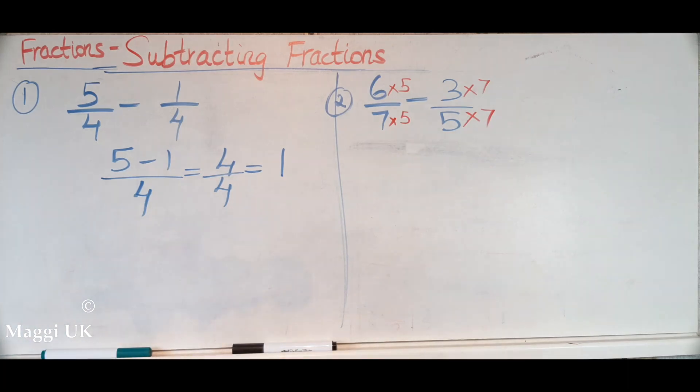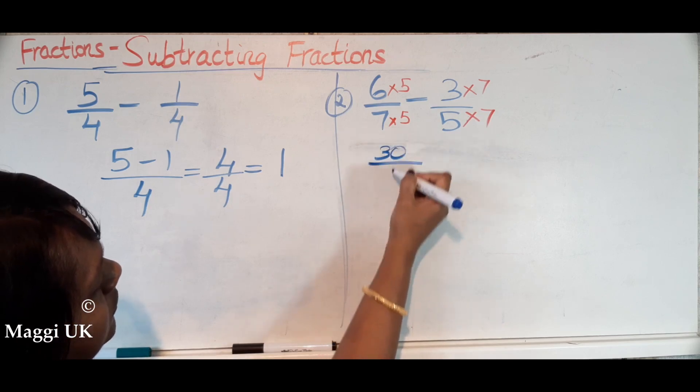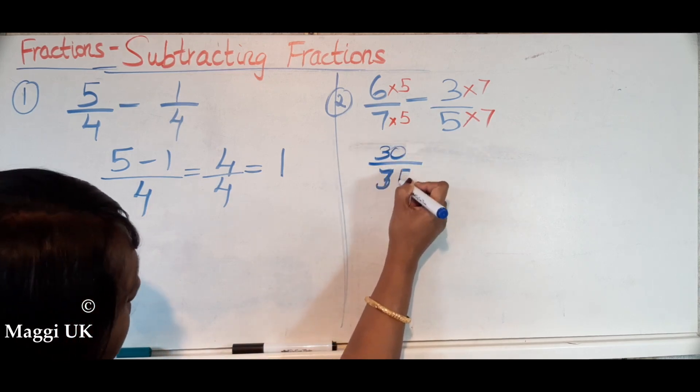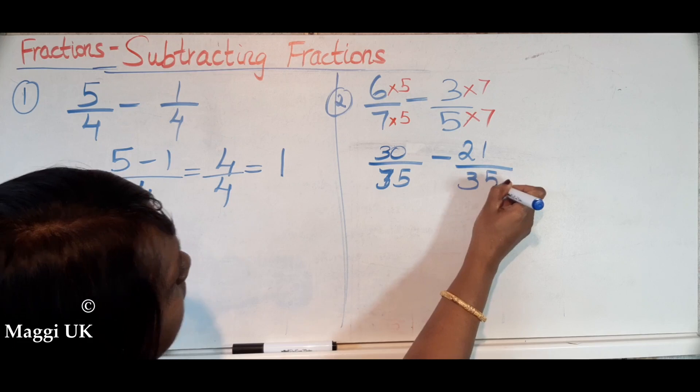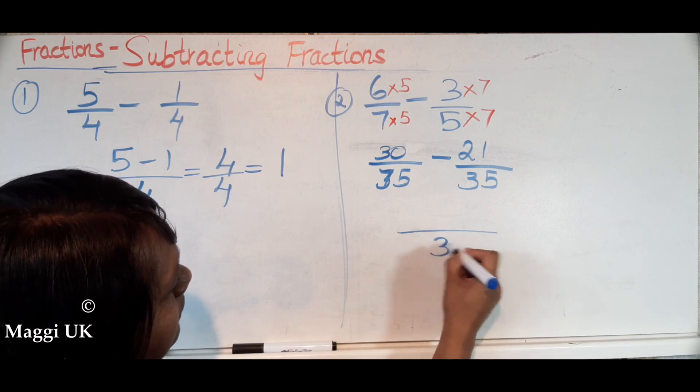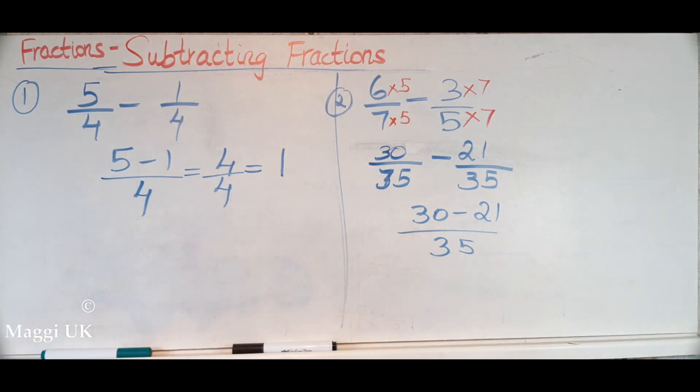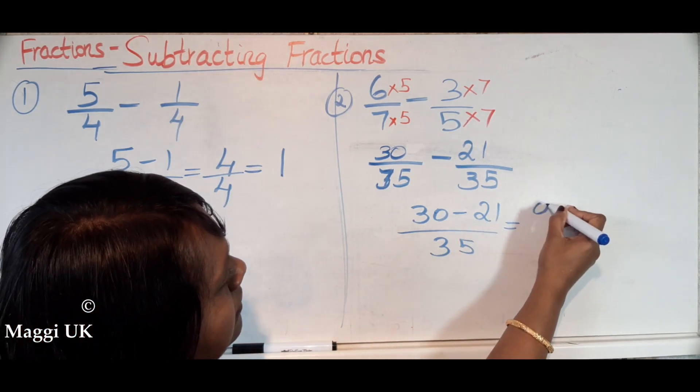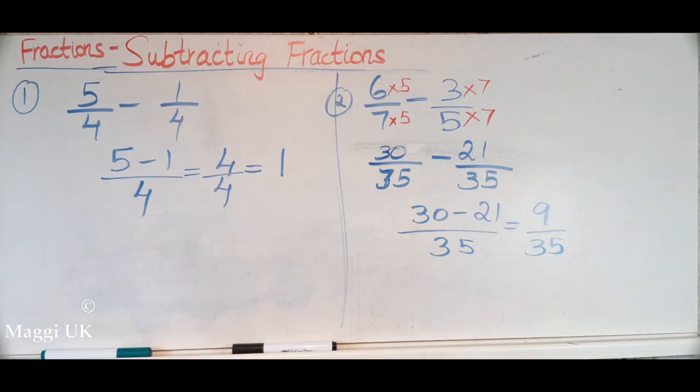And then what we need to do is we just have to times 6 times 5 is 30, and the bottom one is 35. And then take away 21 over 35. See, now it's very easy because, like the same step here, we have same common denominator. We write the common denominator, and then we need to take 30 take away 21, so your answer will be 9/35. We can't simplify this, so that is your answer. Hope you understood this. Very good, Stanley, keep it up.